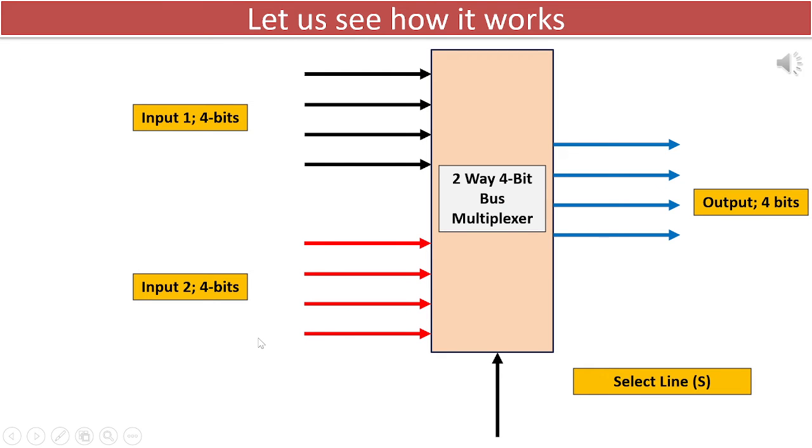Consider a situation where input I1 carries parallel digital information. Regardless of the logic at the other input, if the select line is set to a low logic state, the data from input I0 will be directed to the output.